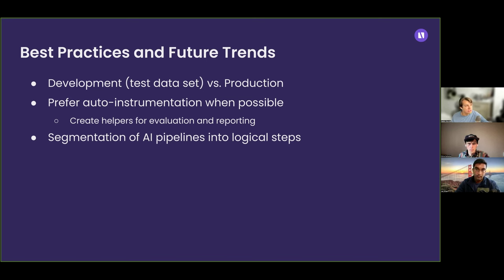Another best practice is to use auto-instrumentation when possible, using libraries like OpenLLMetry rather than implementing your own manual tracing in different places. Auto-instrumentation can be flexible to different invocations in your code — when you add a new OpenAI call, you don't want to be creating a custom span manually. You want auto-instrumentation to magically pick it up and start reporting it. The more you use auto-instrumentation the better, and it would be better to implement your own auto-instrumentation for a custom library rather than adding a bunch of manual tracing inside the library itself.